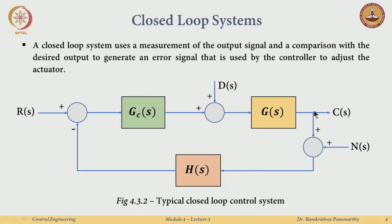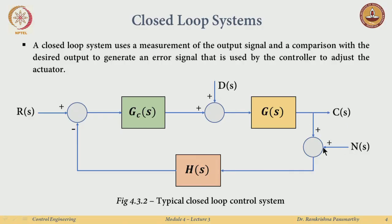In closed-loop systems, the output is measured and compared with the reference signal, generating an error signal. Through the control law, the actuator is adjusted to give the actual control input to the system. Typical issues include the effect of disturbances and measurement noise — measuring devices may not be very accurate and might introduce noise. We want to design our controller to reject both disturbances and measurement noise.